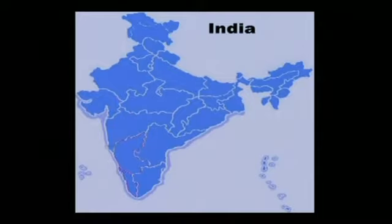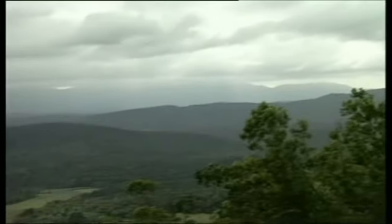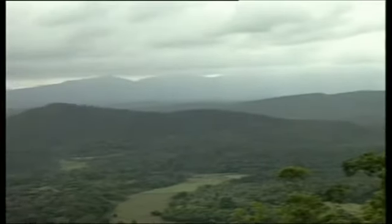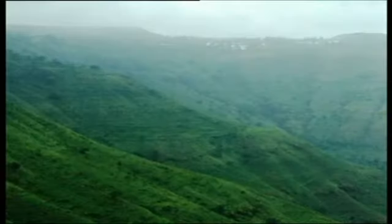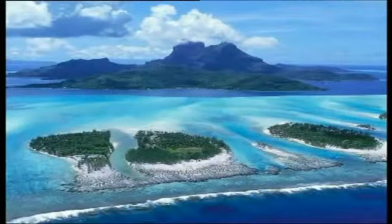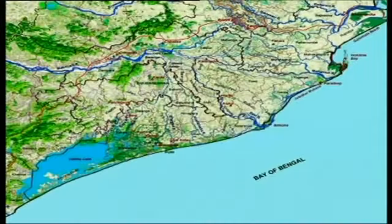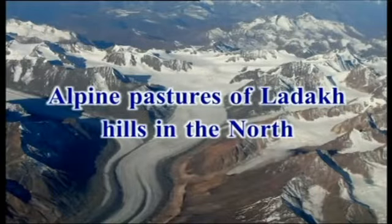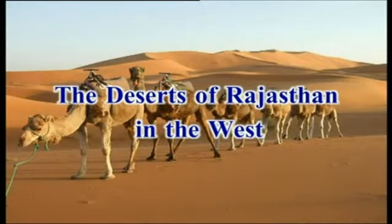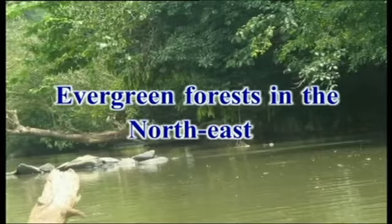Namaskar. The topic of the lesson today is land use in southern India. India is a large and diverse country. Its geographical area includes regions with some of the world's highest rainfall zones to the lowest rainfall regions, the coastline to the alpine regions, river deltas to the tropical islands. India has a very diversified condition in geography, ranging from the rainforests of Kerala in the south to the alpine pastures of Ladakh hills in the north, from the deserts of Rajasthan in the west to the evergreen forests in the northeast. India has a diverse range of landforms.